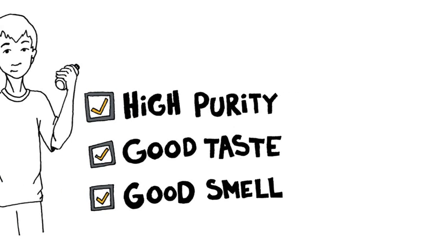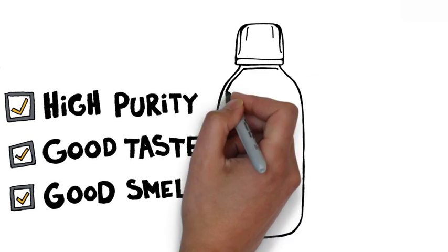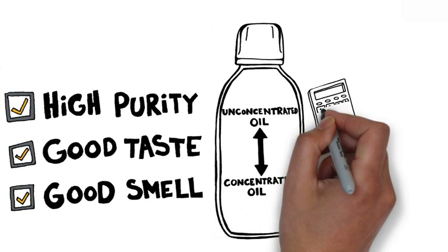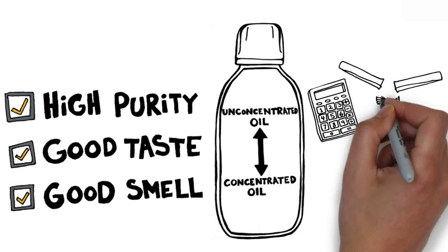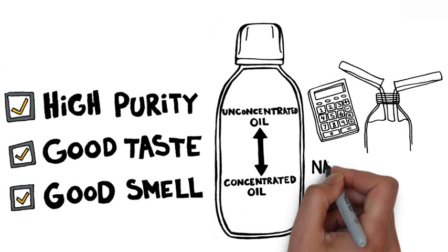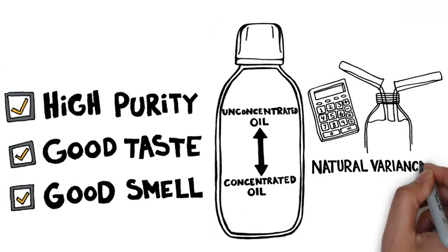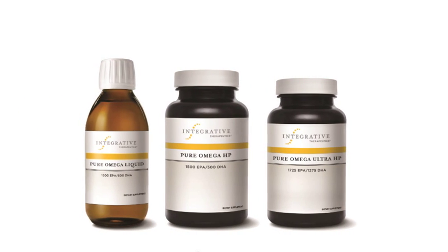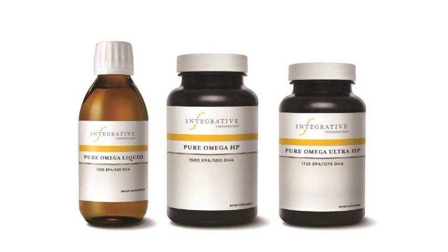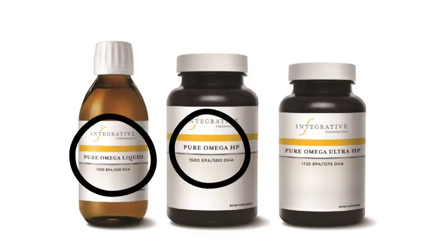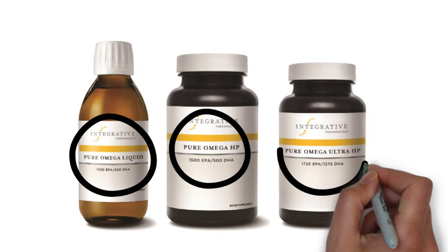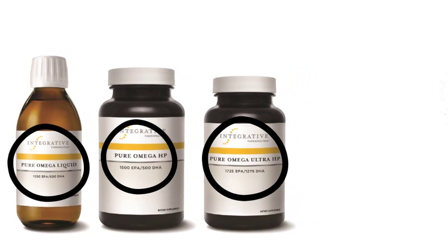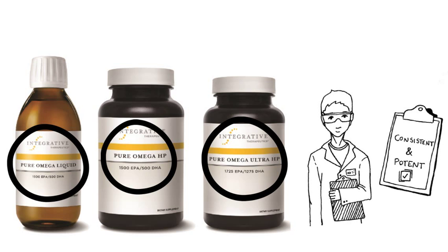The Pure Omega line of fish oils contains mixtures of unconcentrated and concentrated oils. Precise calculations are required to determine the perfect combination of these oils, since there is a natural variance in the Omega-3 content of fish from batch to batch. Consistent with Integrative's commitment to providing premium products, we guarantee the EPA plus DHA label claims on our products, which means that these calculations are required each and every time a Pure Omega product is manufactured to ensure a consistent and potent product.